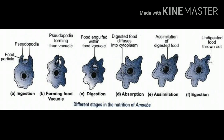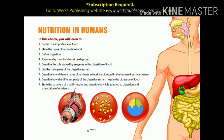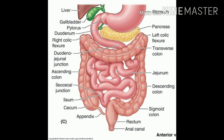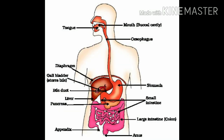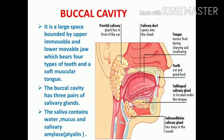Now we start one of the most important topics from which many questions are asked every year in CBSE board examinations — nutrition in human beings. In the human alimentary canal, from mouth to anus, various organs work together to form the digestive system. These include the mouth, salivary glands, esophagus, stomach, liver, pancreas, small intestine, large intestine, rectum, and anus. Remember that the alimentary canal is the food passage, while the digestive system includes both the alimentary canal and the digestive glands.